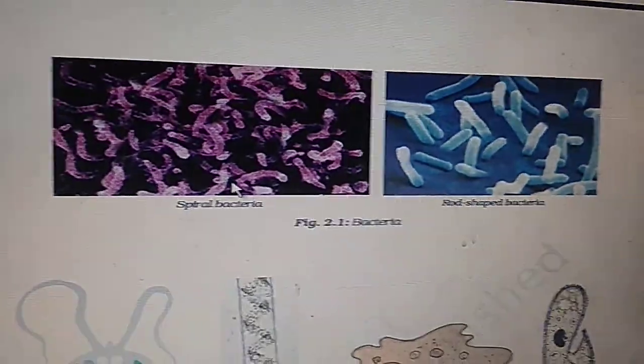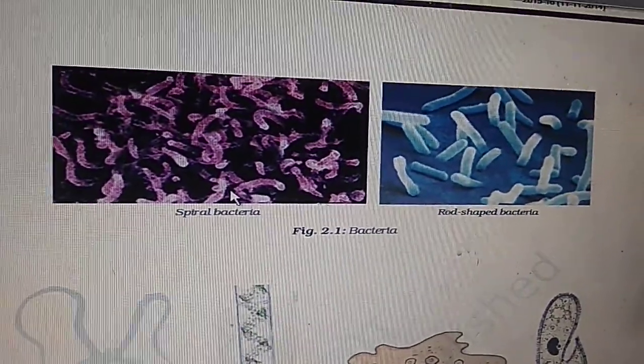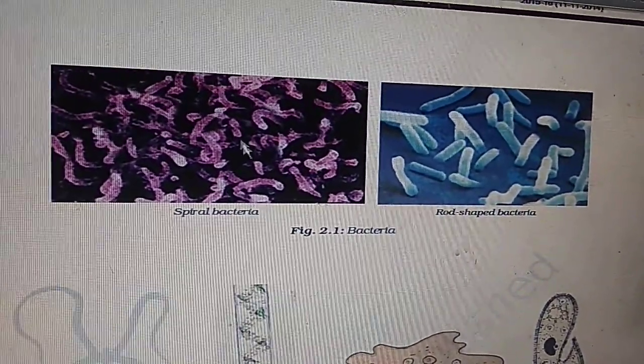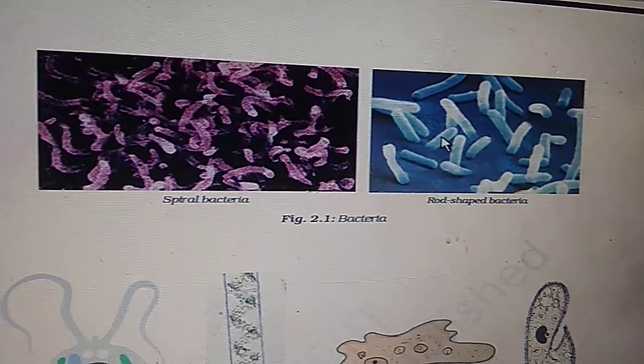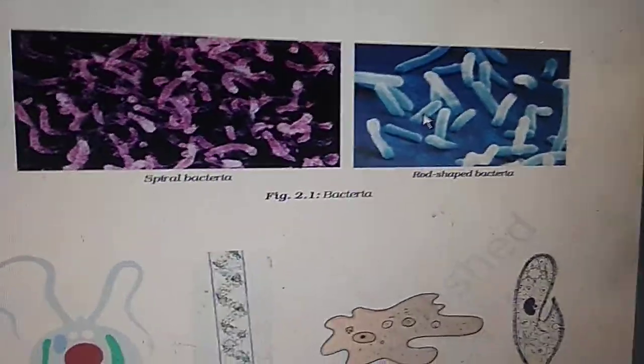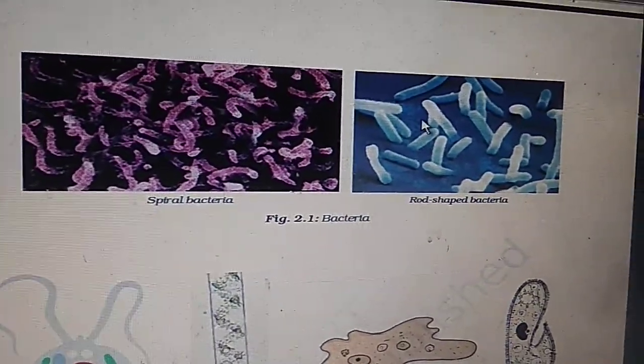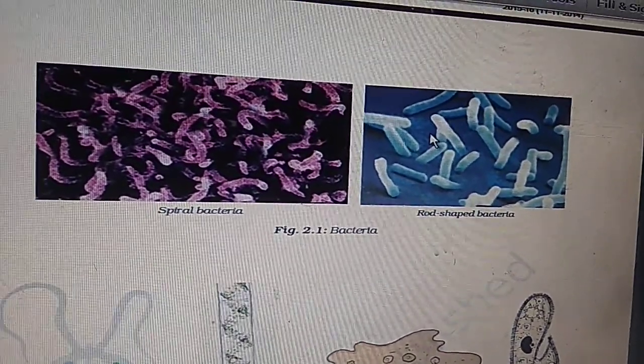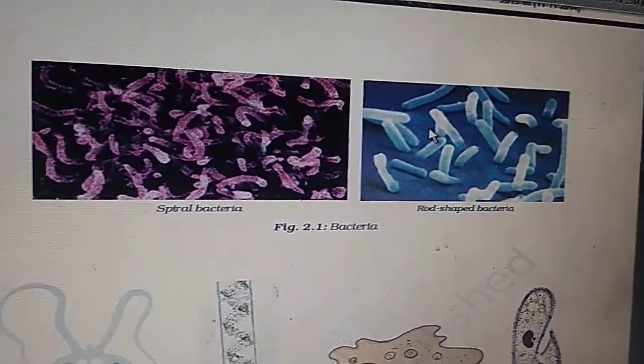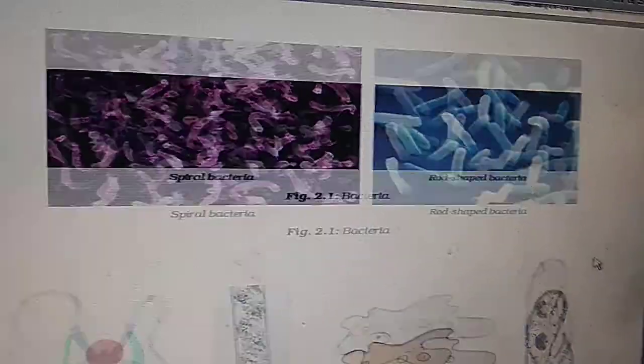Some diagrams are shown here. There are spiral bacteria and rod-shaped bacteria. One example is Lactobacillus, the curd-forming bacteria.